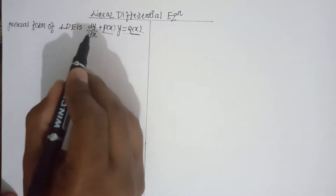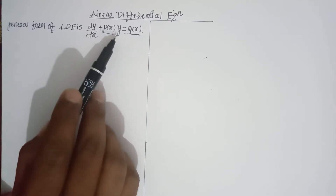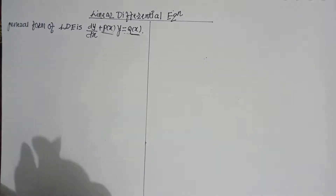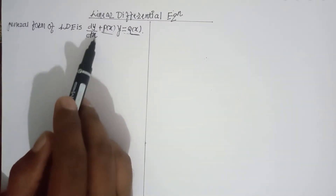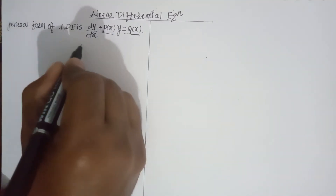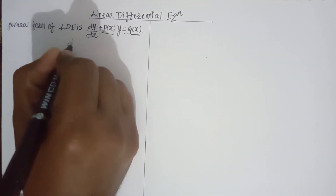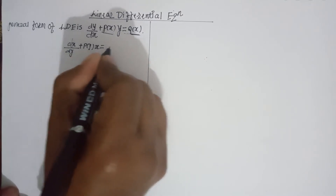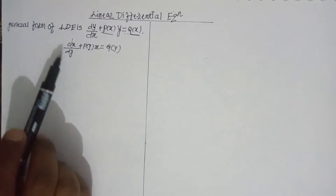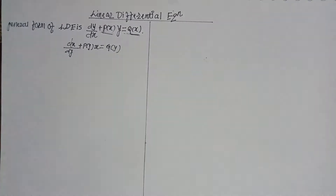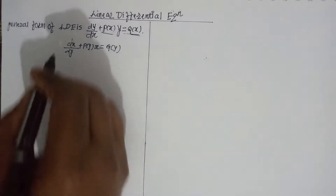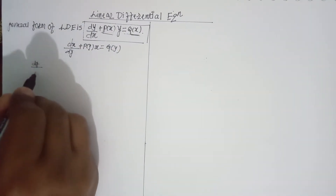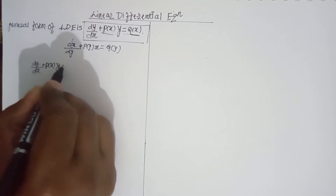Here y is the dependent variable and x is the independent variable. P(x) is a function of x multiplied with the dependent variable y, equals Q(x), a function of x. This form dy/dx plus P(x)·y = Q(x) is the standard form. There is also the analogous form: dx/dy plus P(y)·x = Q(y), where y becomes the independent variable.